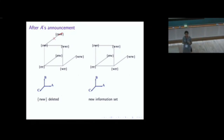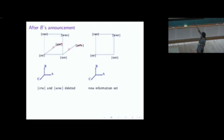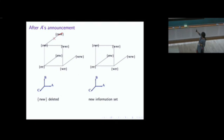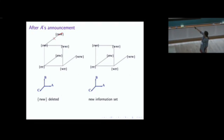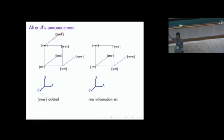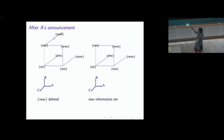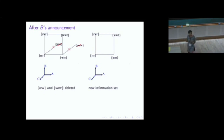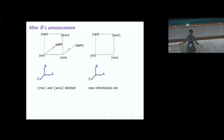When A says she doesn't know her colour, the world RWW is thrown out. When B says she doesn't know hers, the world where A wears red and C wears white is also eliminated. We are left only with worlds where C wears a red hat — which is why C can deduce. So this is another way of solving the puzzle by eliminating possible worlds.